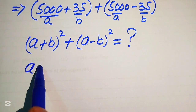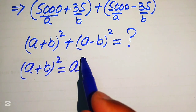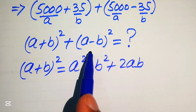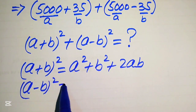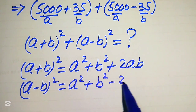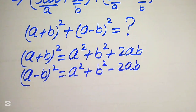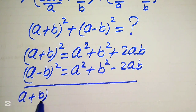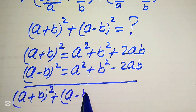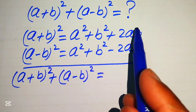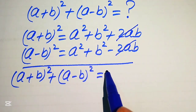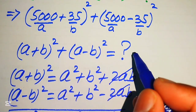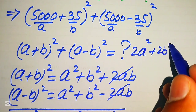We know that (A+B)² equals A² + B² + 2AB, and (A−B)² equals A² + B² − 2AB. Adding these two formulas, the positive and negative 2AB terms cancel, giving us (A+B)² + (A−B)² equals 2A² + 2B².